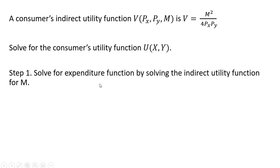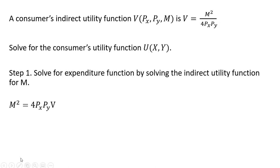Step 1: solve for the expenditure function by solving the indirect utility function for m. We're going to take this equation and solve it for m. Multiplying everything through by 4 times the price of good x times the price of good y, and then taking the square root of both sides, we have the expenditure function.